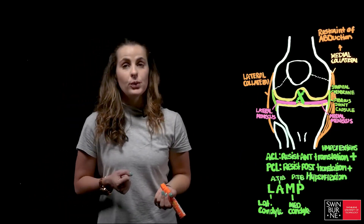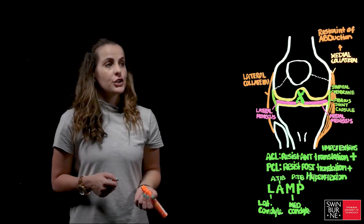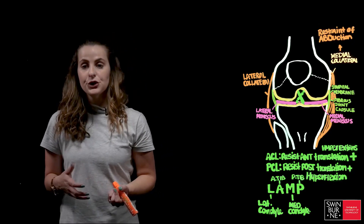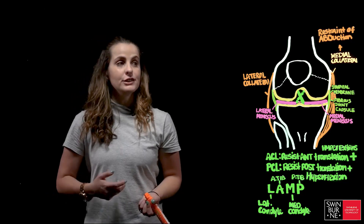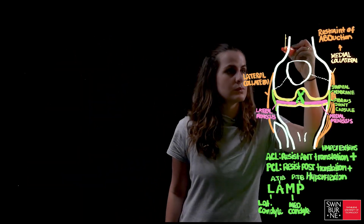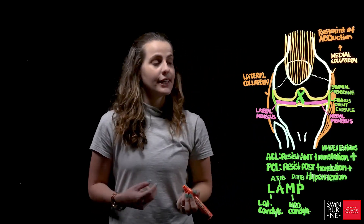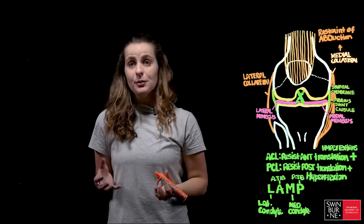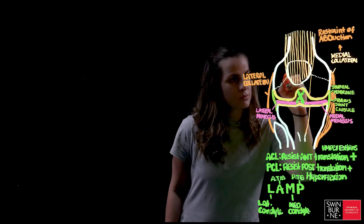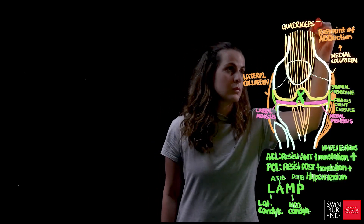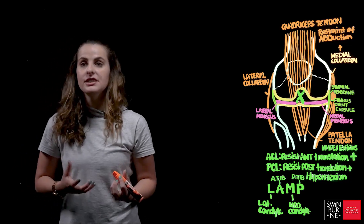An important structure to be aware of is the major tendons crossing the external aspects of the joint. The quadriceps muscles from the anterior compartment of the thigh give rise to a common tendon — the quadriceps femoris tendon — which inserts onto the patella. The quadriceps tendon then merges with the patella ligament at the side of the patella, becoming a continuous band inserting onto the tibial tuberosity. This creates an improved angle of pull, offering greater mechanical advantage when performing knee extension.